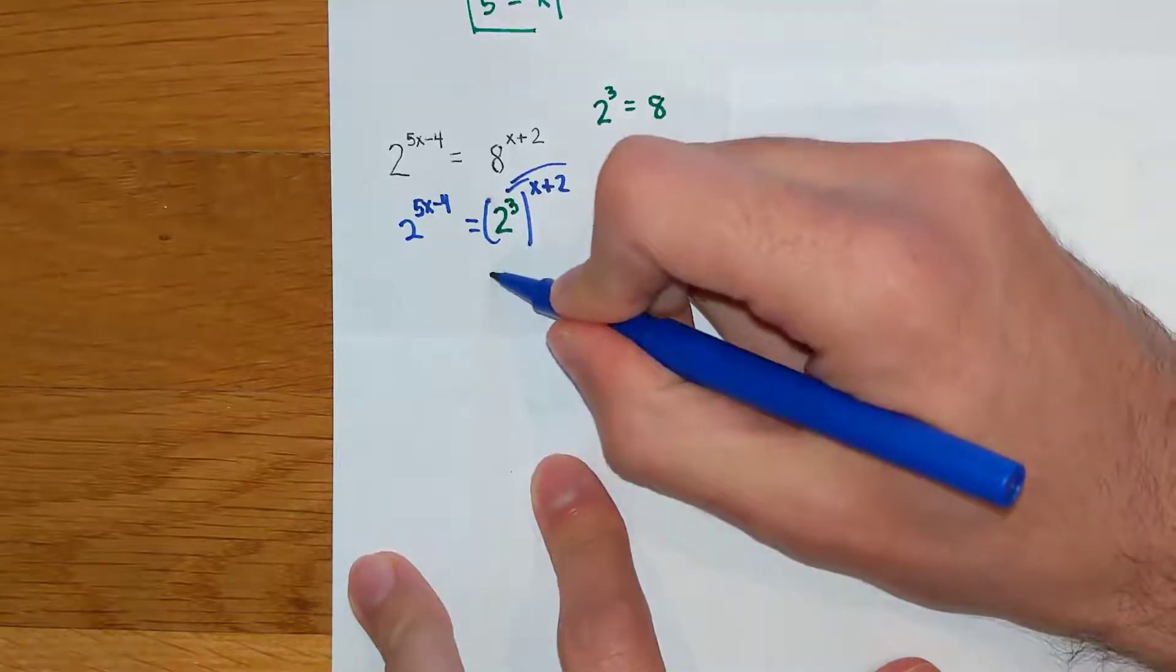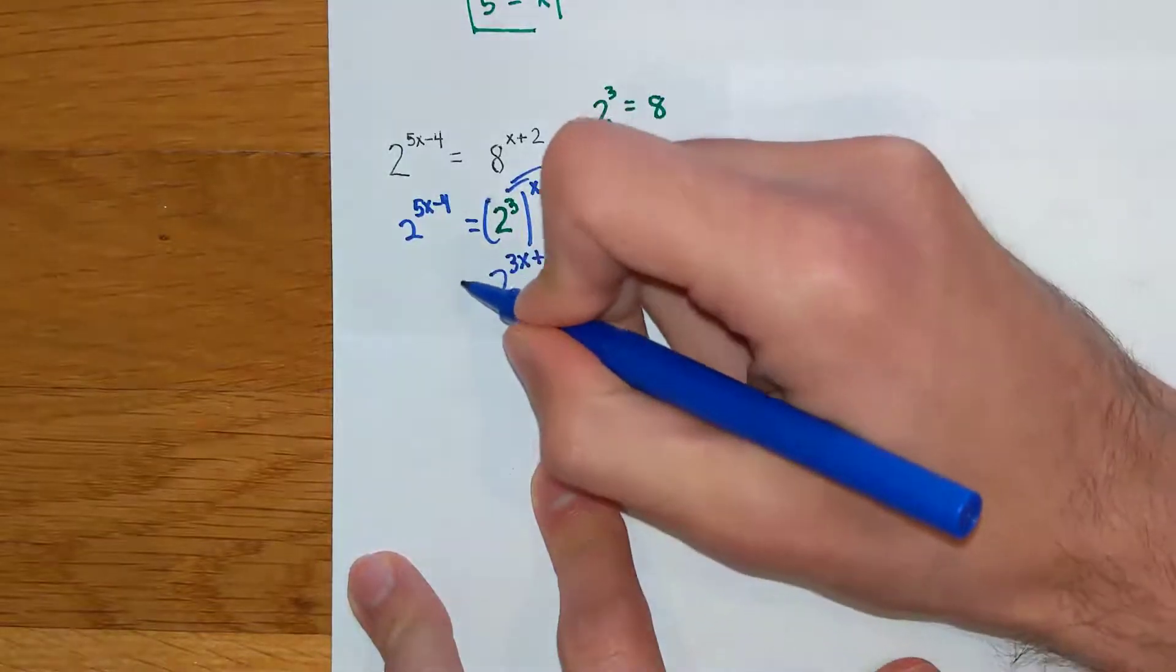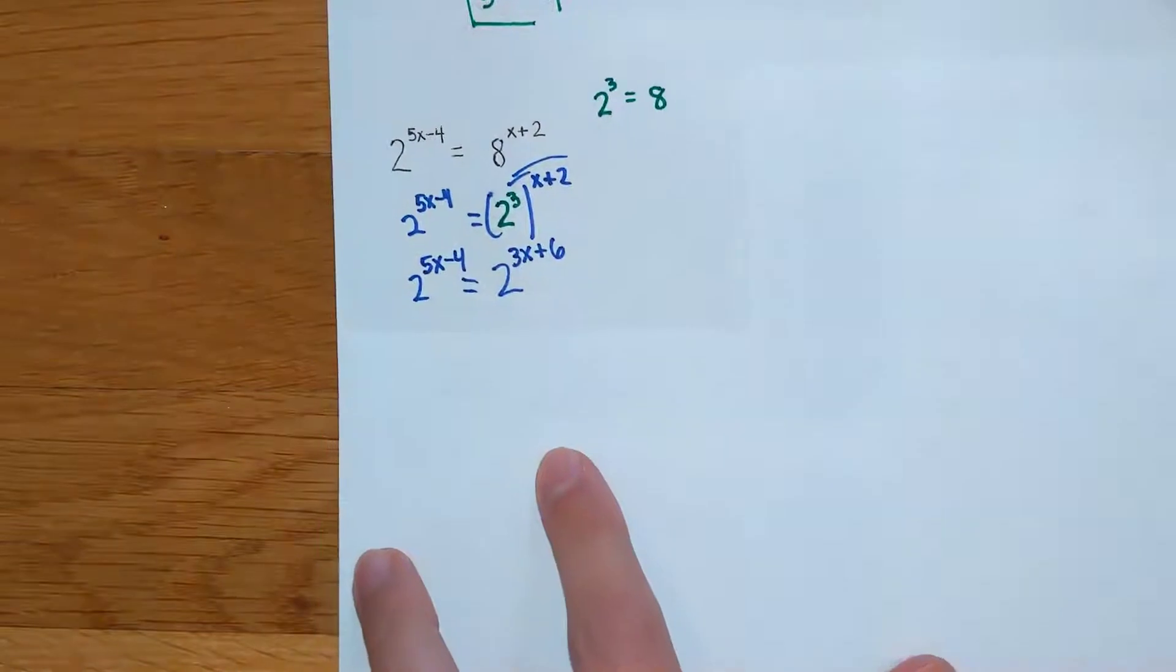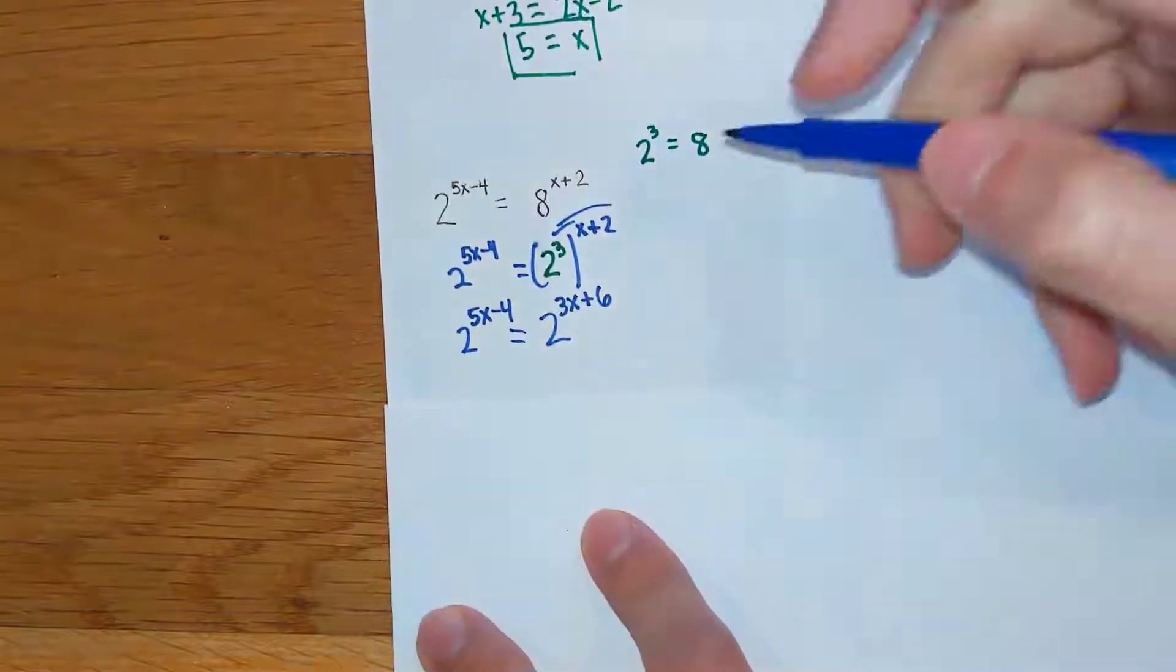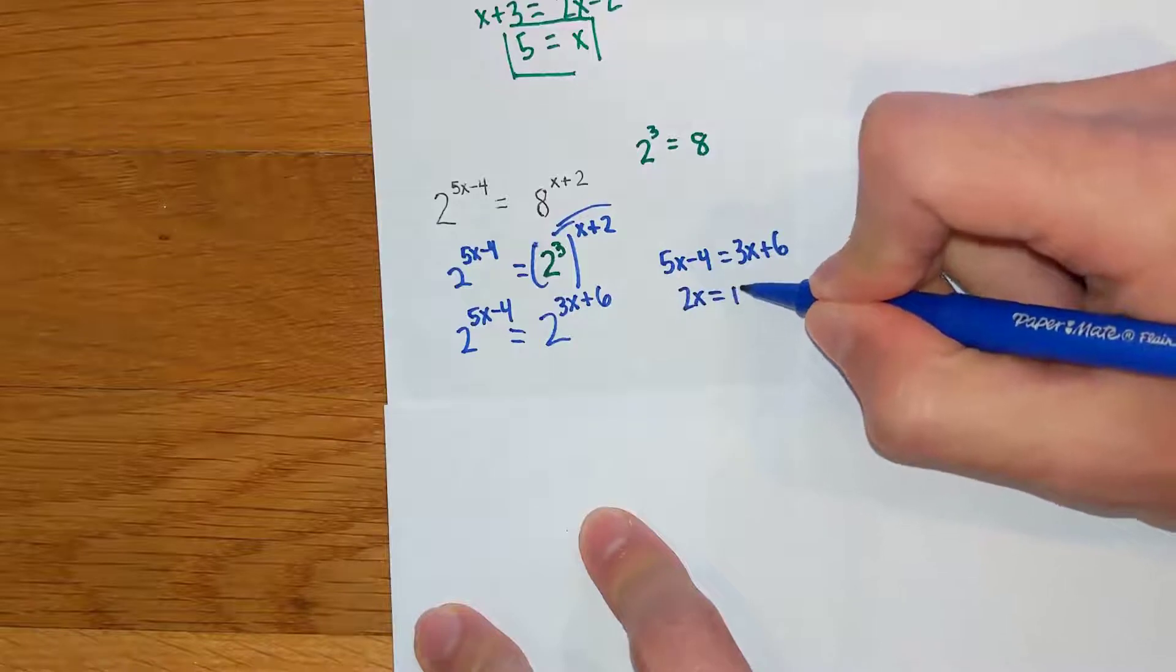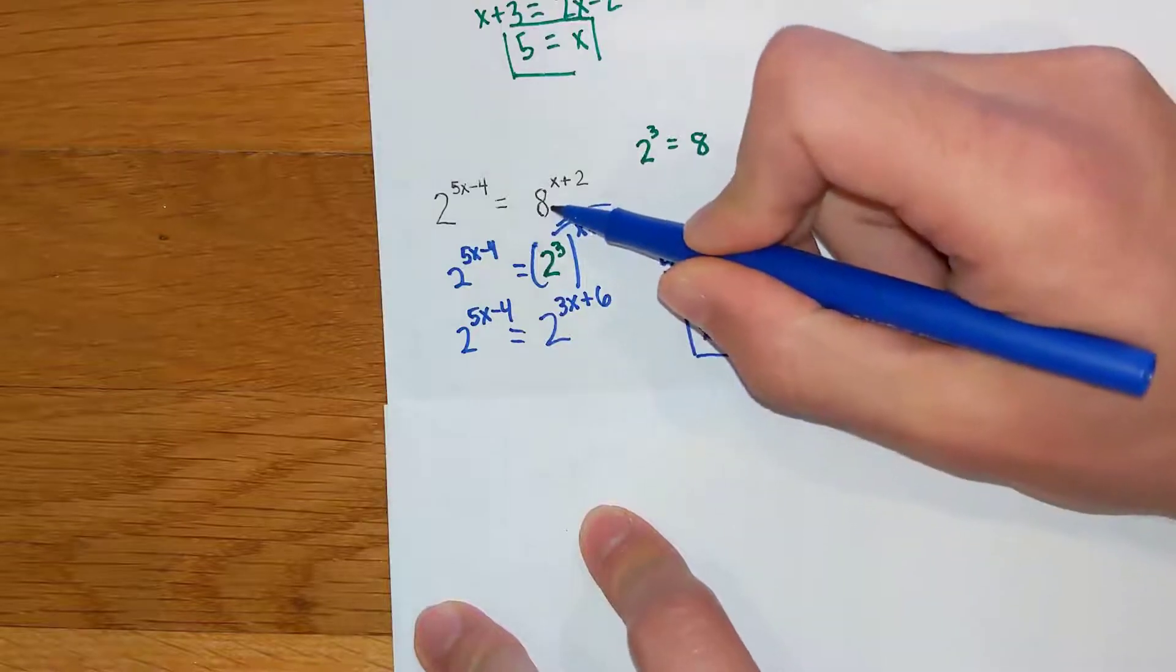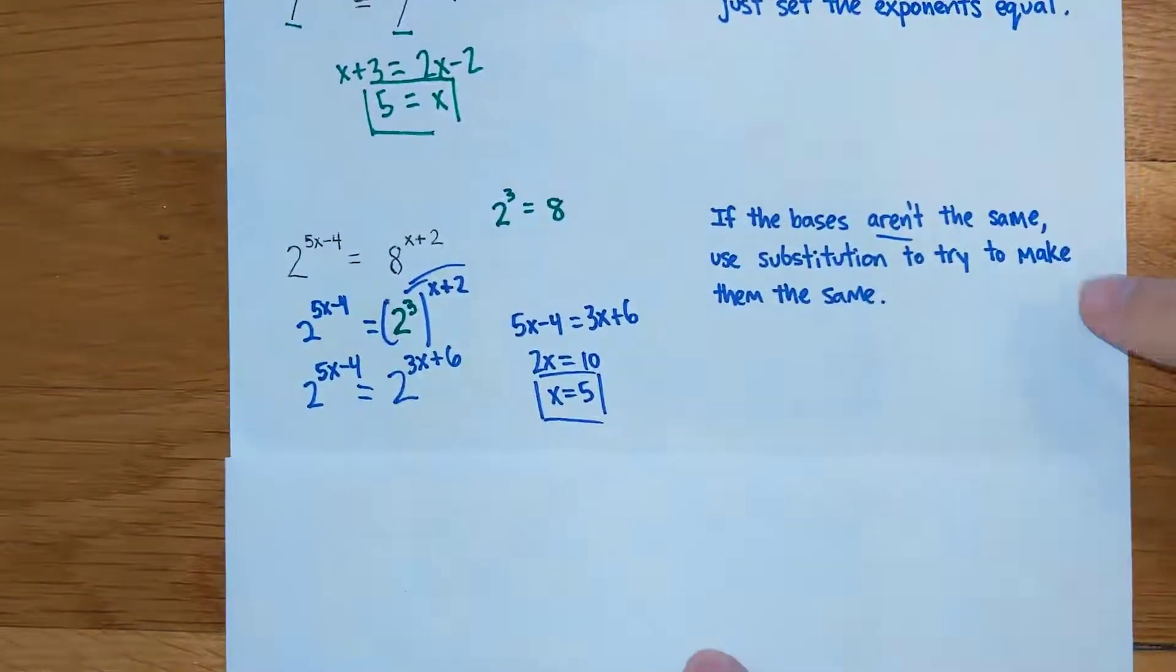If I do that, I'm going to distribute out my exponent right here, and it's going to say 2 to the 3x plus 6. And then this side over here is still 2 to the 5x minus 4. Now I do have the same base, just like on my first problem up here. And what I'm going to end up doing is setting my exponents equal to each other. So I'm going to have 5x minus 4 equals 3x plus 6. And if you solve this one, you also get x equals 5. So by substituting something in here, we got the same base, then you just set your exponents equal. So if your bases are not going to be the same, you have to use substitution to try to make them into the same base.